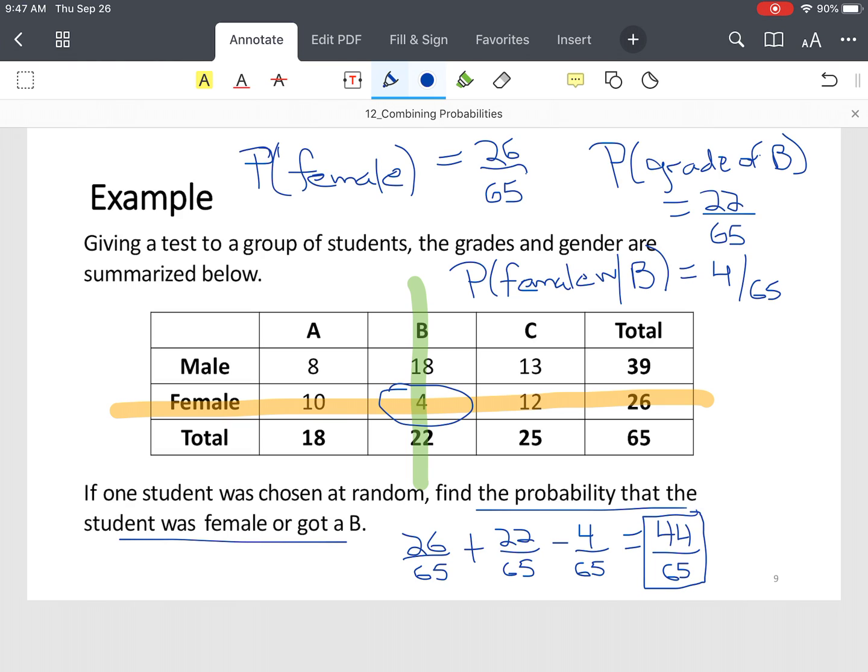So that's how you find probability of an or statement, or what you would call an either statement. And in this particular case, we were given a table.